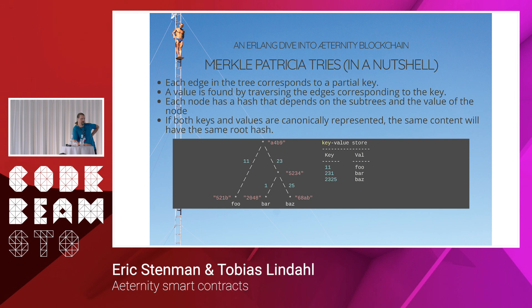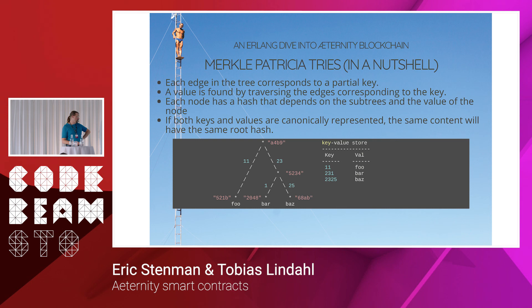Each edge in the tree has a partial key, and the key is really stored as a path in the tree. For each node in the tree, you compute a hash based on the subtree and the value at that node. In this example, you can follow the path in the tree from the root hash at the top: the 1-1 path gives you the value 'foo', the 2-3-1 gives you 'bar', and 2-3-2-5 gives you 'bass'. The hash at the top — A4B9 — is the root hash representing the full content of the tree. The hash function for this example is the 'Tobias hash', so it won't make any sense.